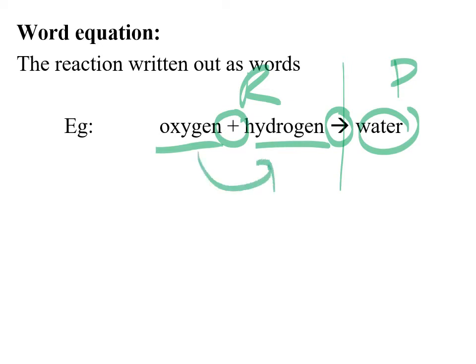The order of the reactants doesn't really matter. Same thing if there's more than one product — doesn't really matter. As long as you have the reactants on the left side and the products on the right-hand side, you've got an equation. If they're written with words, it is a word equation.